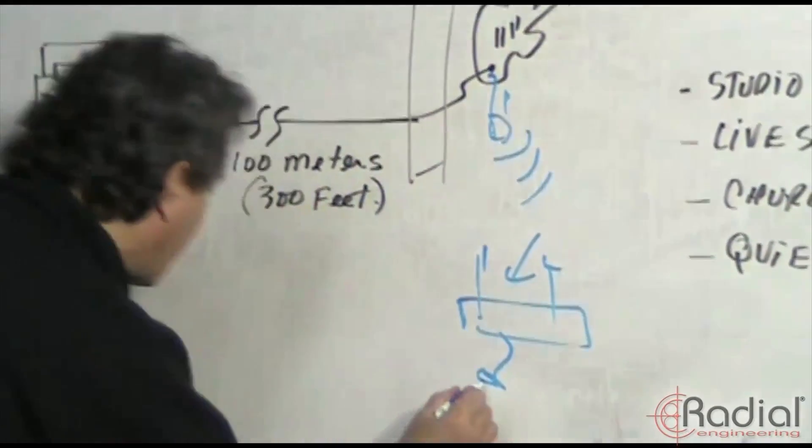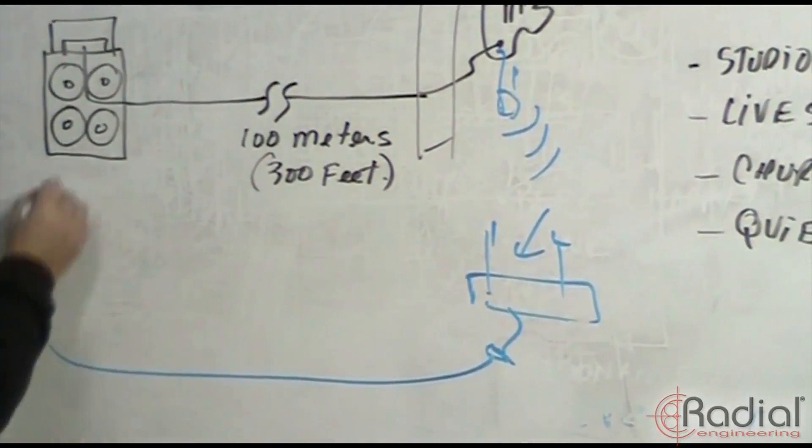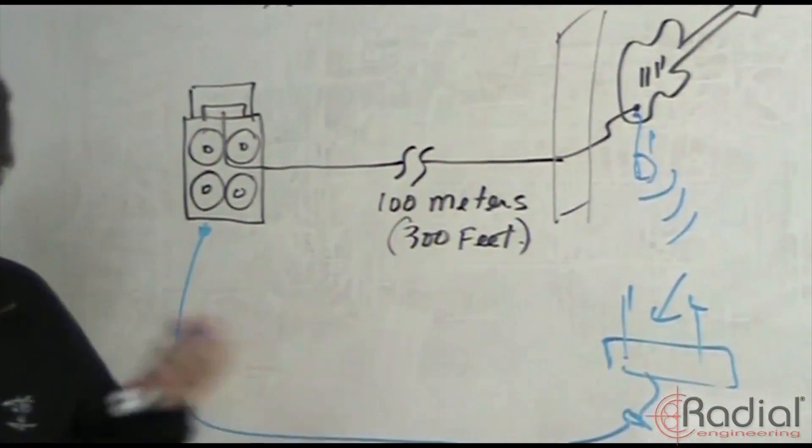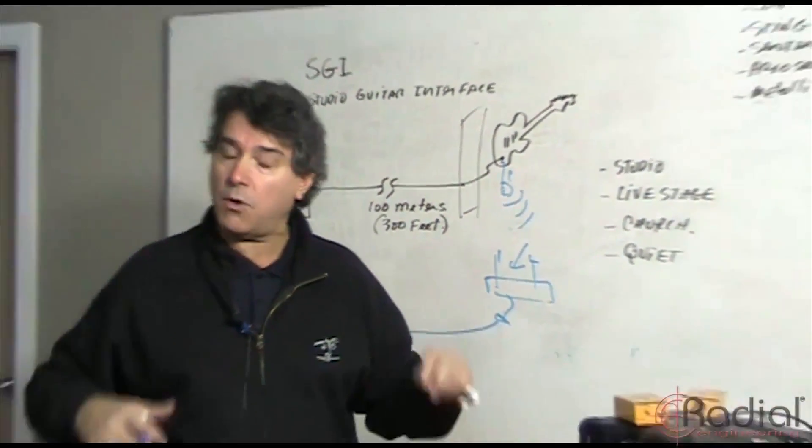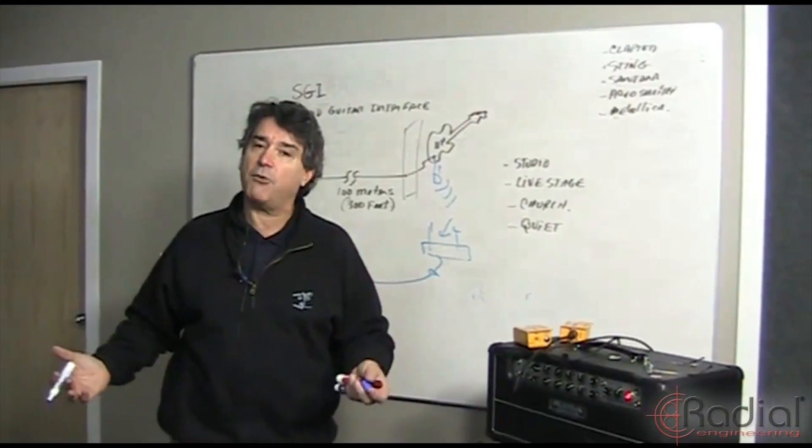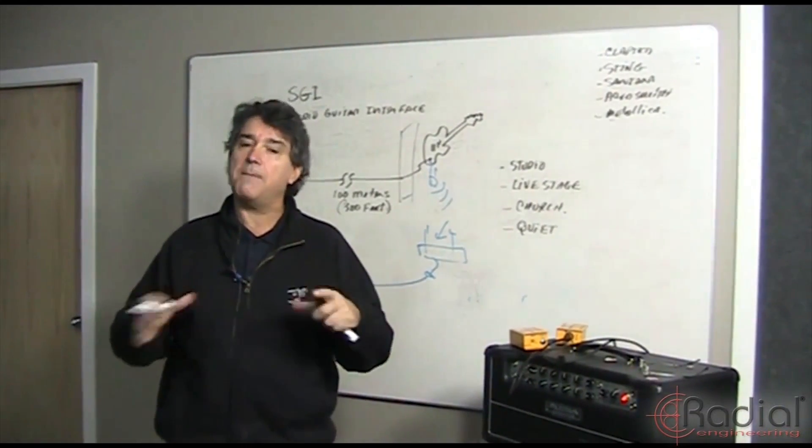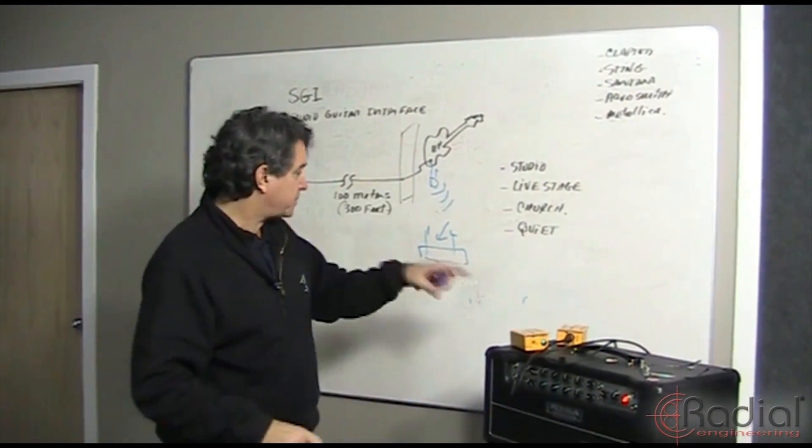From the receiver it now has to run all the way down the stage to the amplifier or to the pedals and back. That's where the SGI is often found. Also on stages, we make a box called the SGI 44 that actually has a send-receive combination for pedal boards. That's really cool.